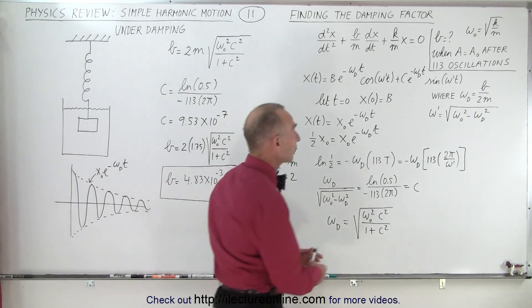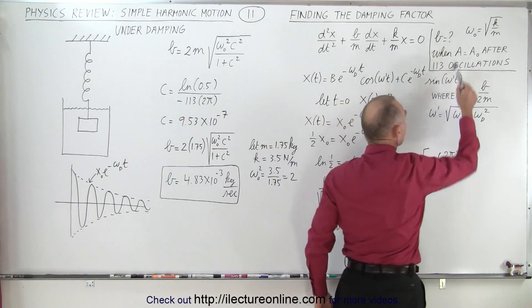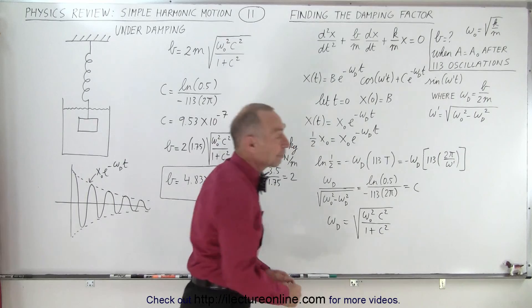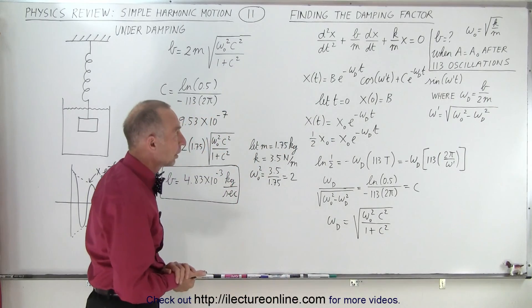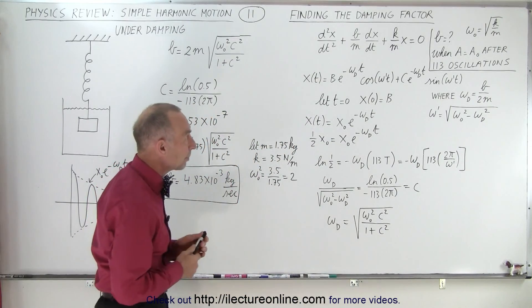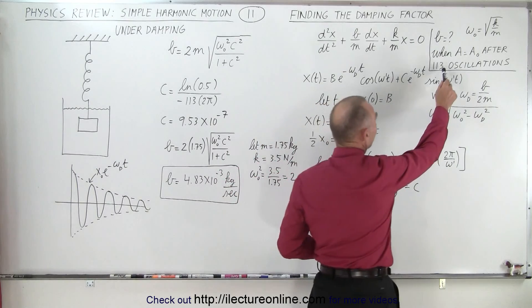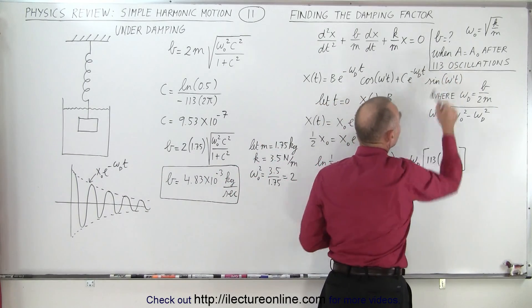And of course we know that the omega, the angular frequency, is the square root of k over m if there's no damping at all. We're going to show you an example where after 113 oscillations the amplitude is,